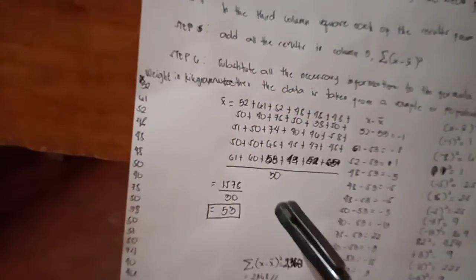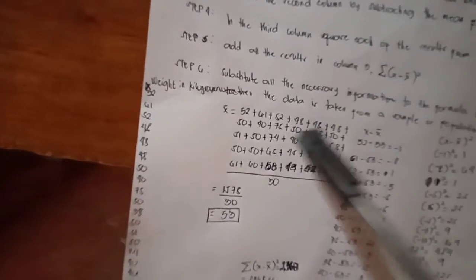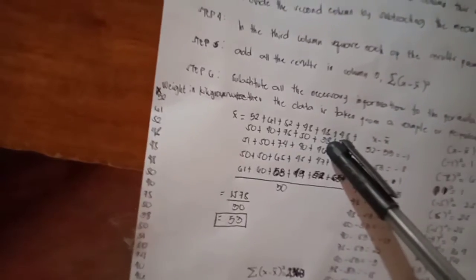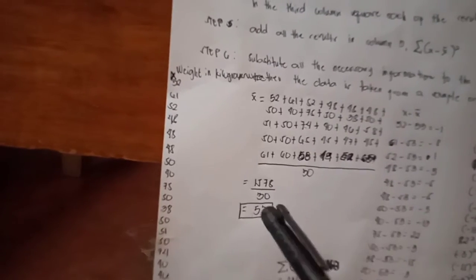By adding and dividing by the total number of data values, which is 30, by adding here divided by 30 is equal to 1,578 divided by 30 is equal to 53.